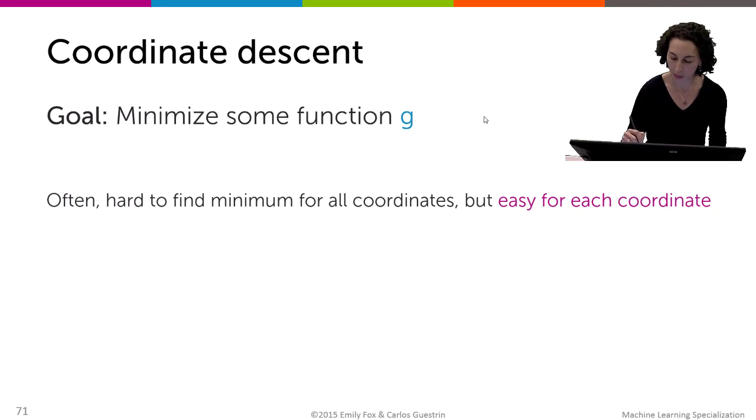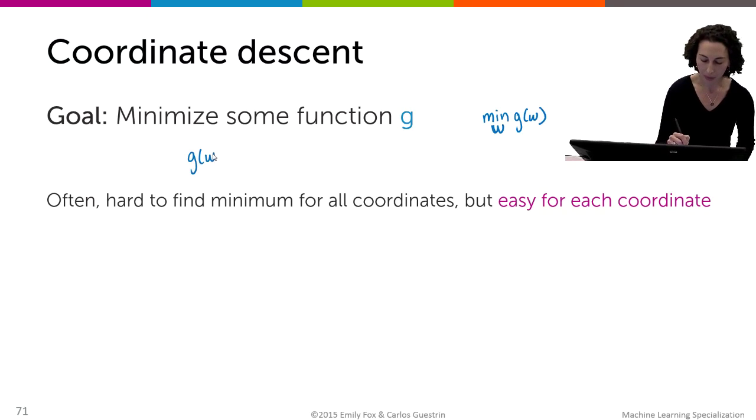But let me just be very explicit where we're saying we want to minimize over all possible w some g of w. Here, we're assuming g of w is a function of multiple variables.